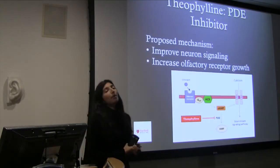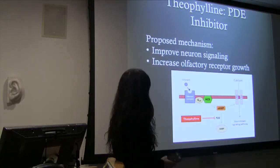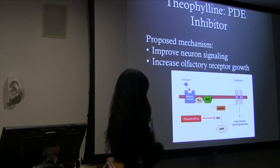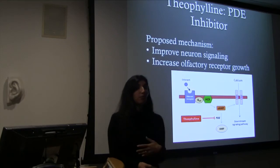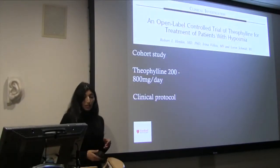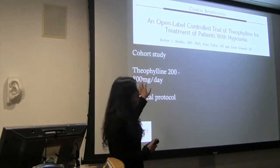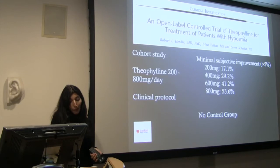Theophylline is another thing people got excited about. It's a phosphodiesterase inhibitor — when a G-protein coupled receptor is activated, it activates cyclic AMP, and phosphodiesterase blocks the breakdown of that cyclic AMP. The thinking was that with more cyclic AMP, we might be able to potentiate neuronal signaling. There was an open-label cohort study of patients with hyposmia using oral theophylline that found some minimal subjective improvement, but there was no control group.